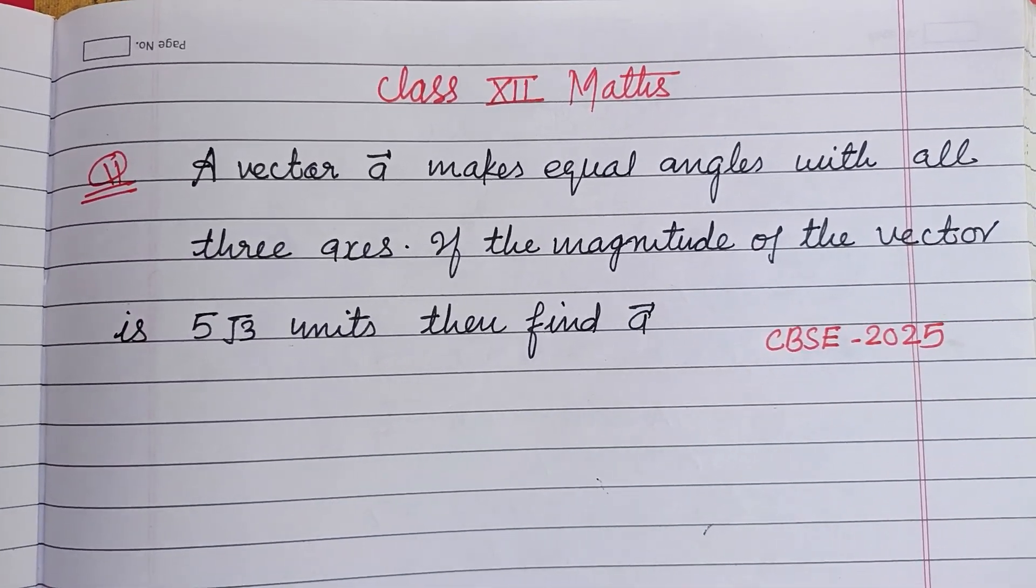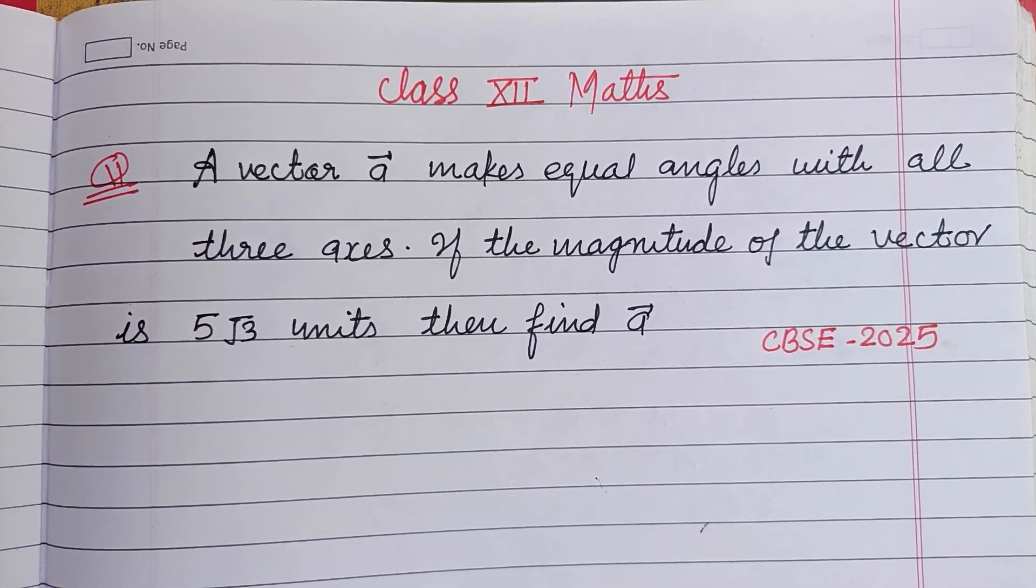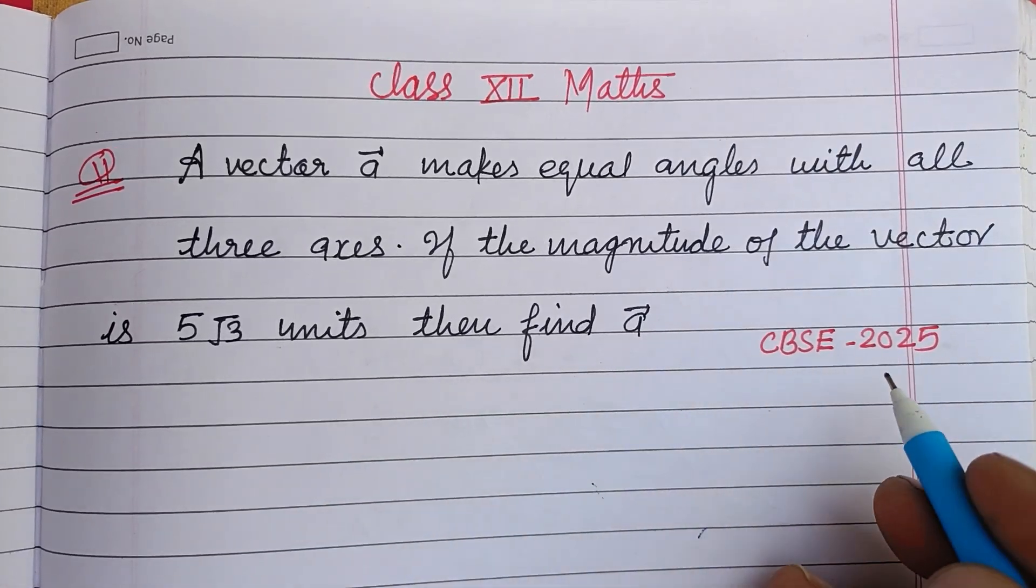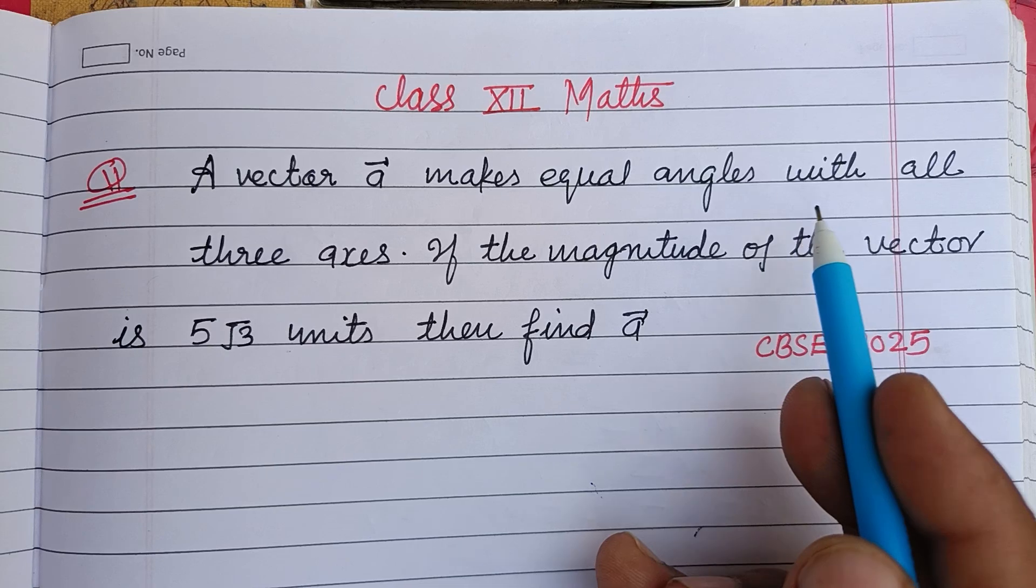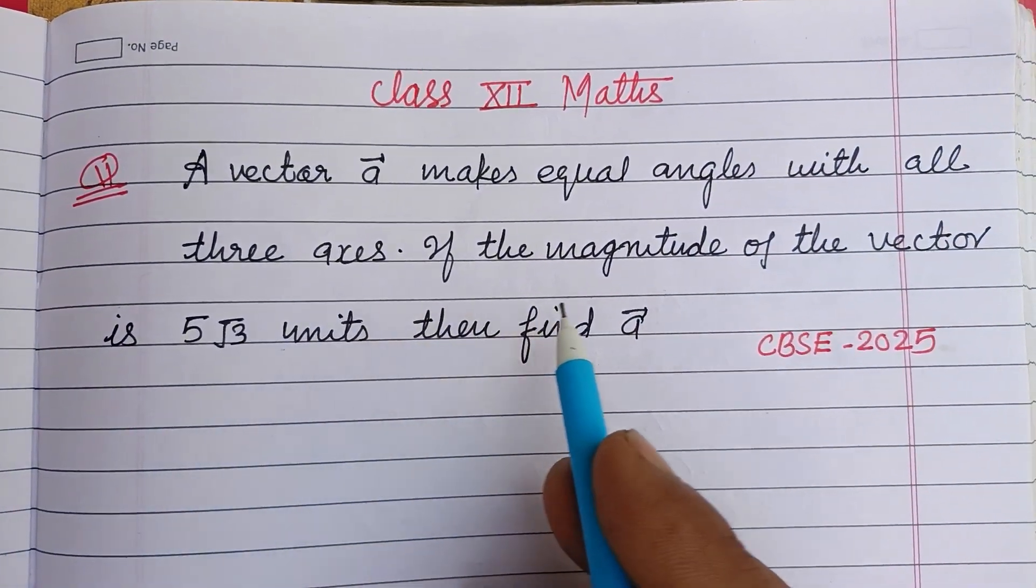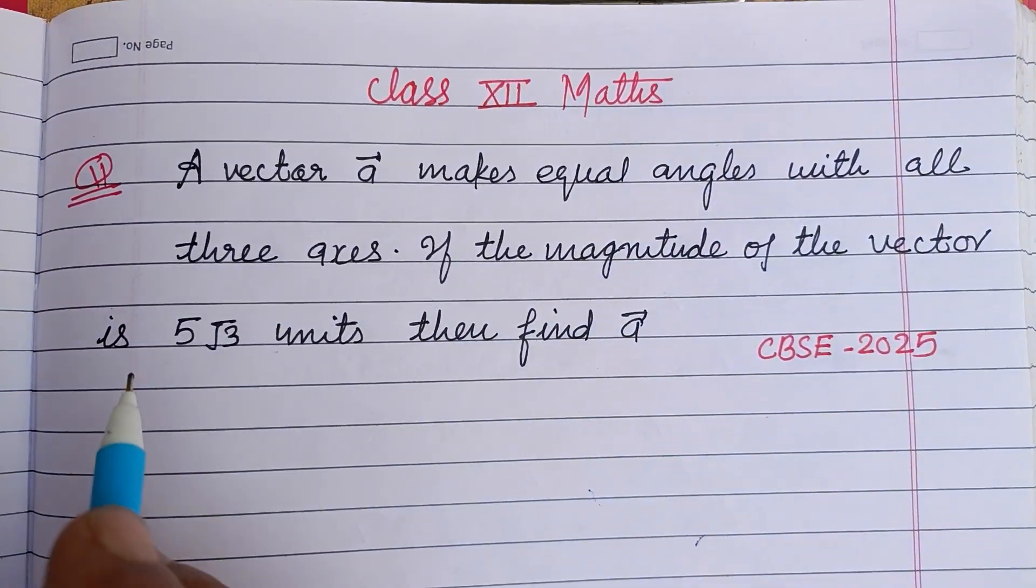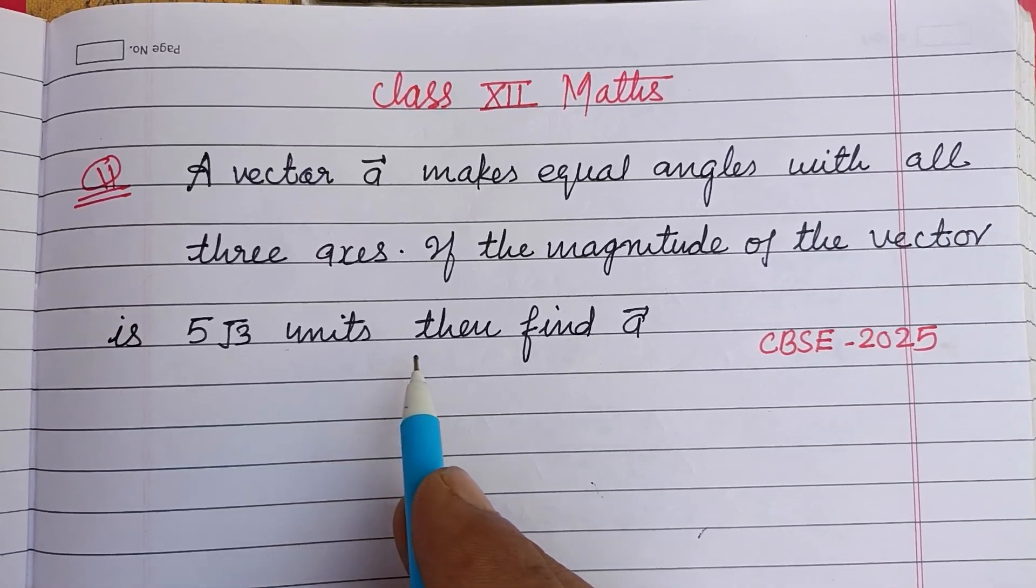Hello viewers, warm welcome to this YouTube channel. Question from CBSE Board Exam 2025, Class 12: A vector a makes equal angles with all three axes. If the magnitude of the vector is 5 root 3 units, then find a.